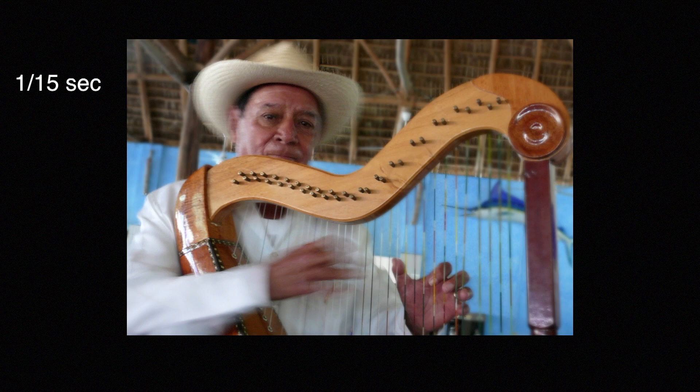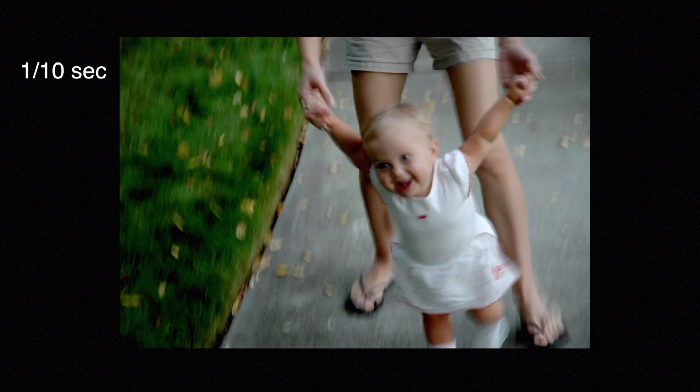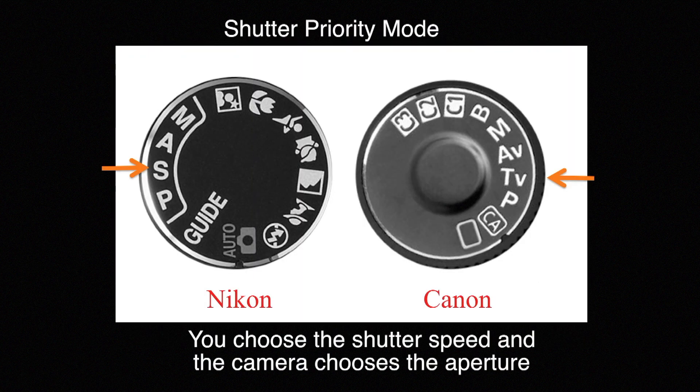This photo is taken at a fifteenth of a second. There's enough movement of his hands to show action, but his face is almost still. These images with motion blur are fun to take and produce interesting results. This one is taken at a tenth of a second. Our digital cameras make it easy to select the shutter speed we want and have the camera adjust to the right aperture for a balanced exposure.